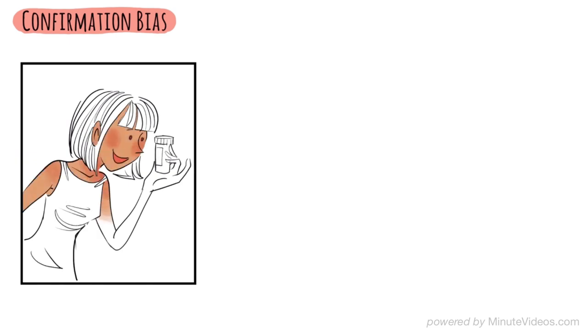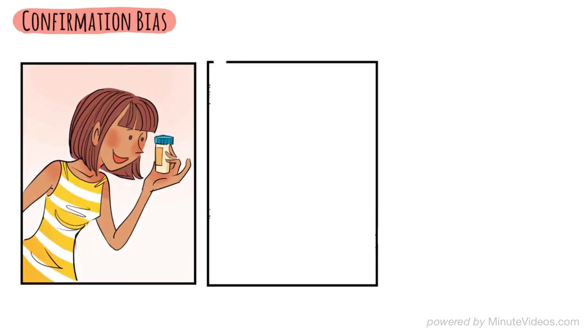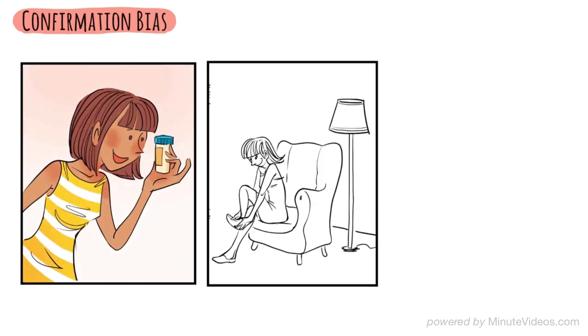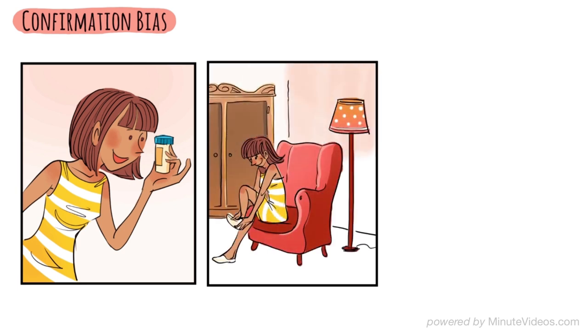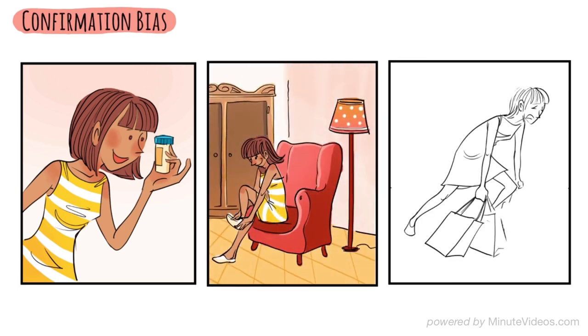And there is confirmation bias. As soon as Mrs. Martin takes the sugar pill, she thinks she will feel better. Then she focuses only on the things that confirm that she is better. She doesn't realize that she still has trouble doing many other things.